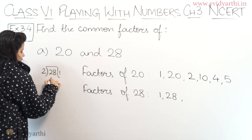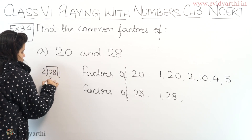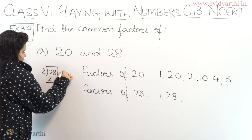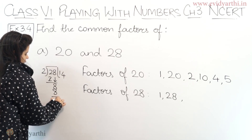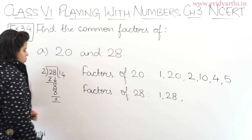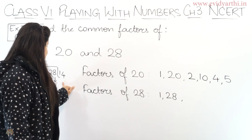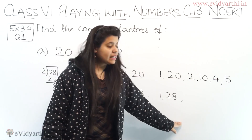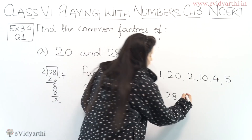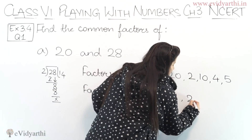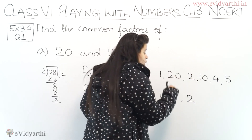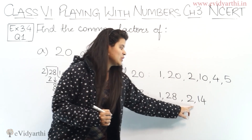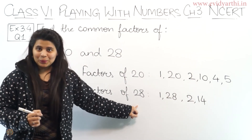Dividing 28 by 2 gives 14. So 2 into 14 is 28, meaning both 2 and 14 are factors of 28.